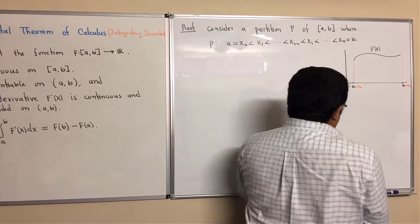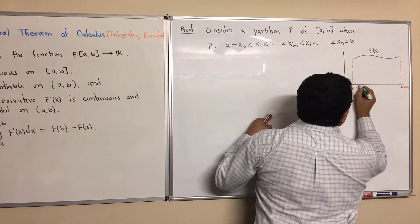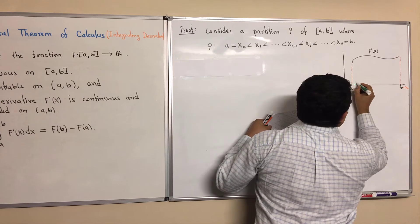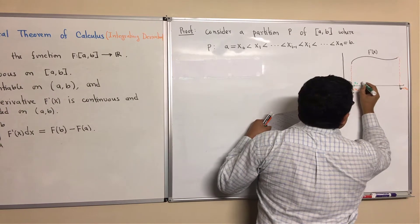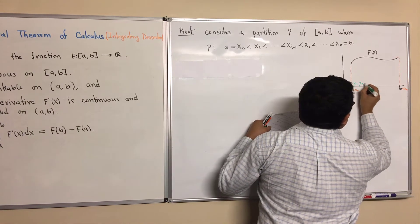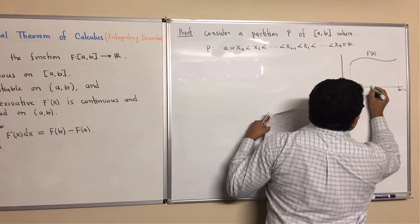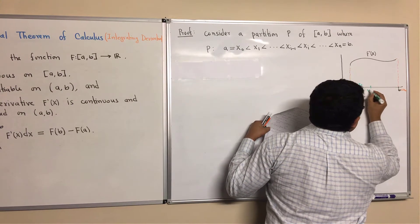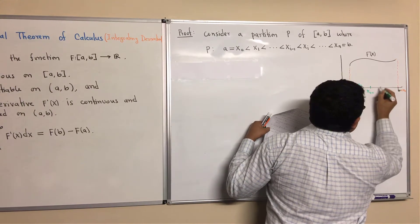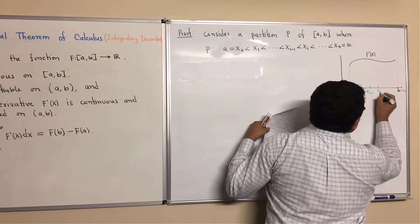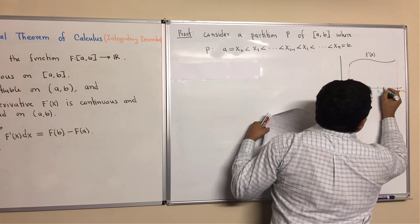We consider the partition points: x1, then x2, and so on. Suppose this is x(i-1), and this is xi, and it keeps going.